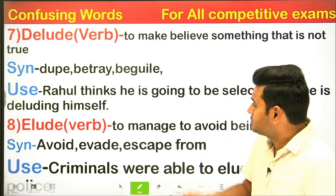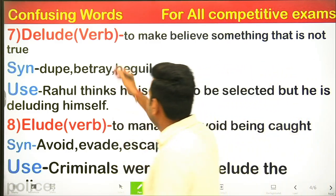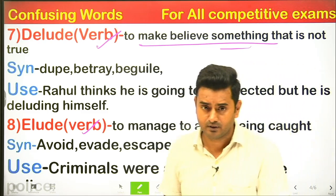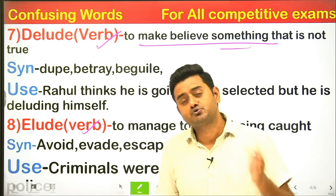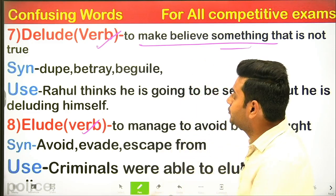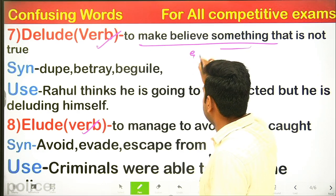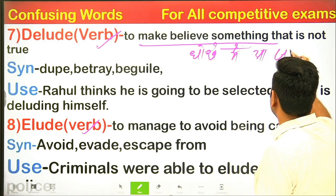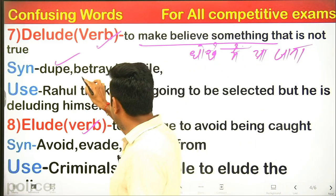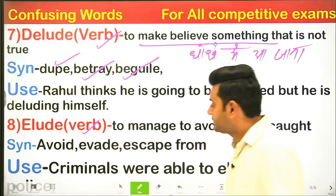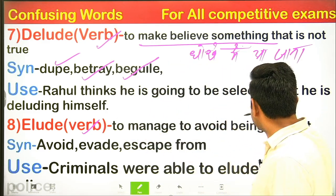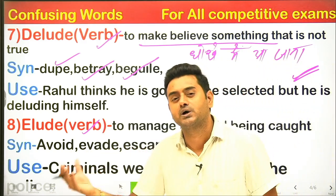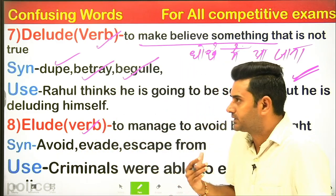Next words: 'delude' and 'elude' — both are very good words with similar sounds. Delude means to make someone believe something that is not true — to be deceived, to fall into deception. Synonyms include: betray, deceive. Example: 'Rahul thinks he is going to be selected, but he is deluding himself.' Meaning: Rahul believes he will be selected, but he is deceiving himself.